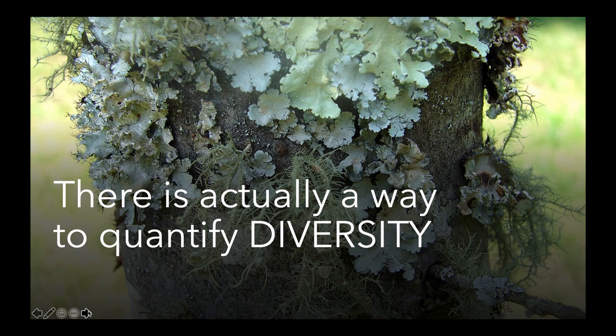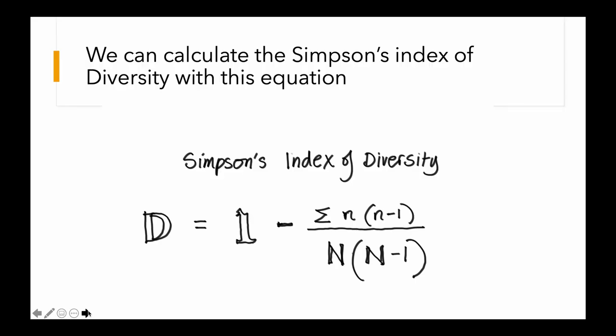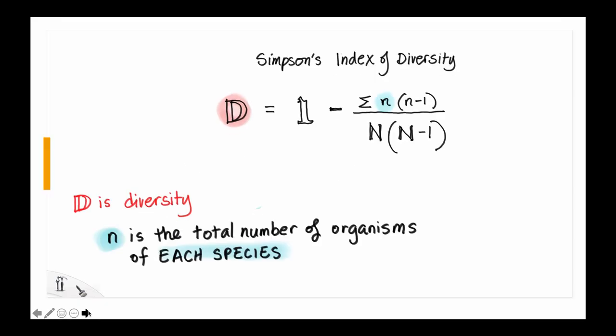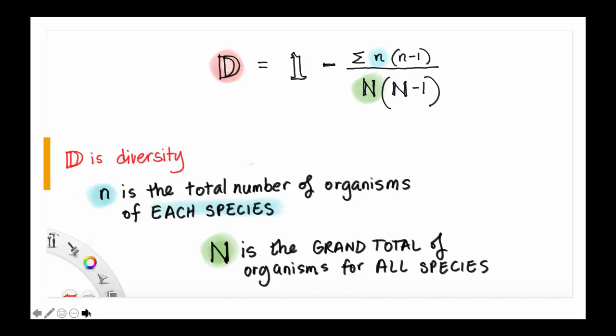There's actually a way to quantify diversity, and that's using Simpson's Index of Diversity with this equation. D stands for diversity, little n is the total number of organisms of each species, and big N is the grand total of organisms of all species.